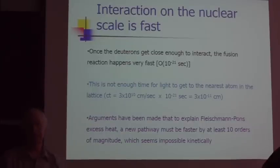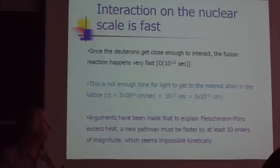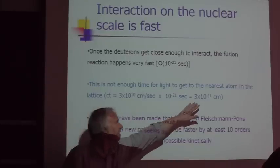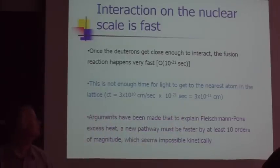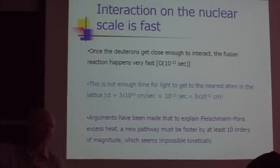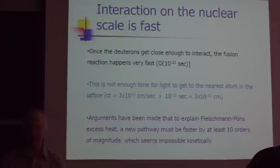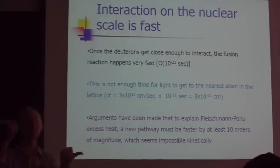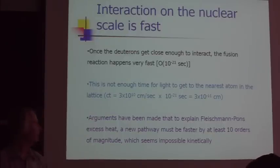You can use this argument to say very powerfully that two deuterons, even if they come together in a deuteride lattice, once they come together, light can only make it 3 times 10^-11 centimeters, which is 300 barns, a very tiny fraction of the distance between atoms. So there's no way to let the lattice know about it. There's just not enough time to communicate the energy from the reaction to the lattice.